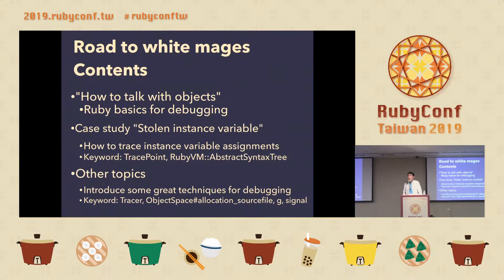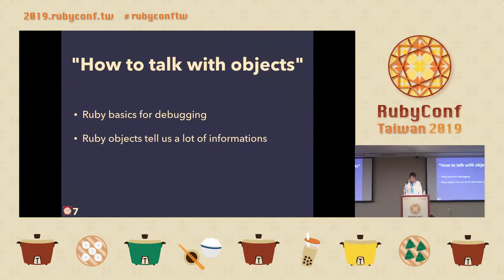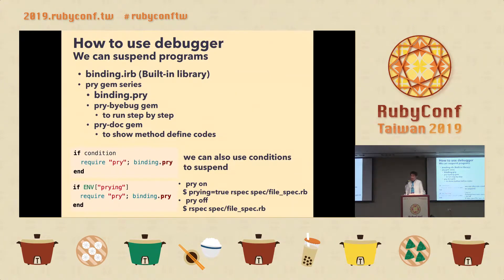Here is the talk content again. First, we are talking about Ruby basics for debugging. How to talk with objects — Ruby objects tell us a lot of information. First, how to use the debugger. We can suspend programs using binding.irb, which is a built-in library.